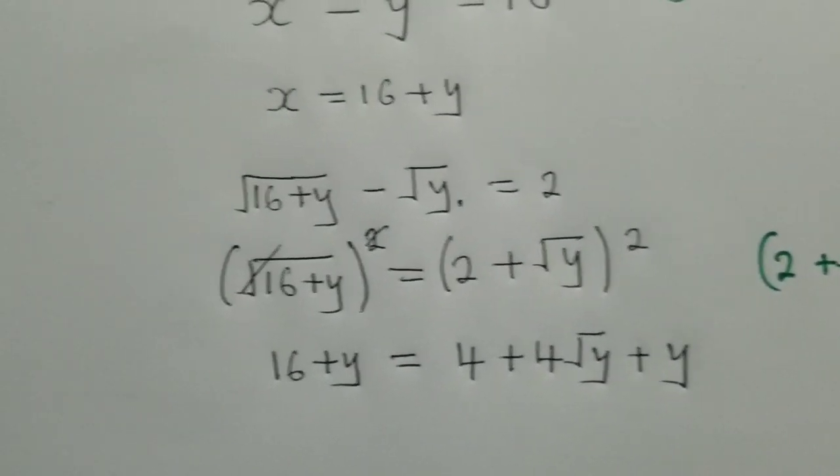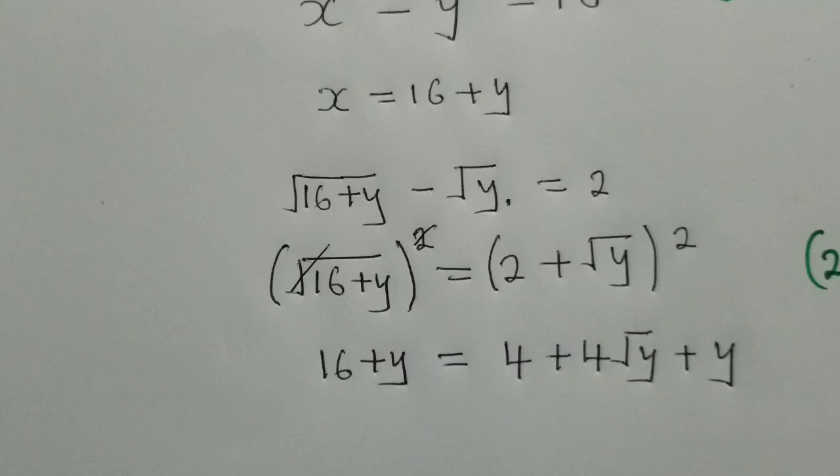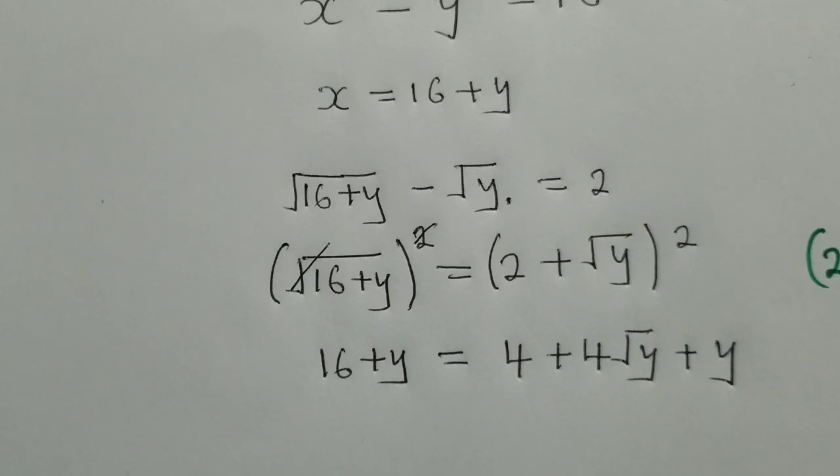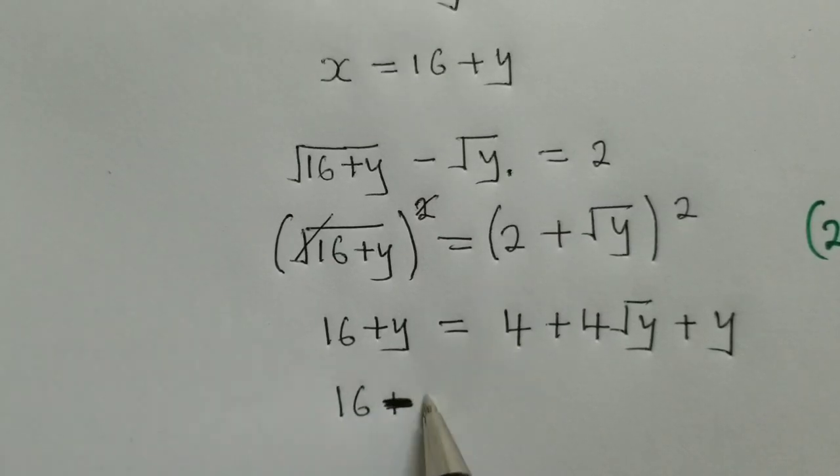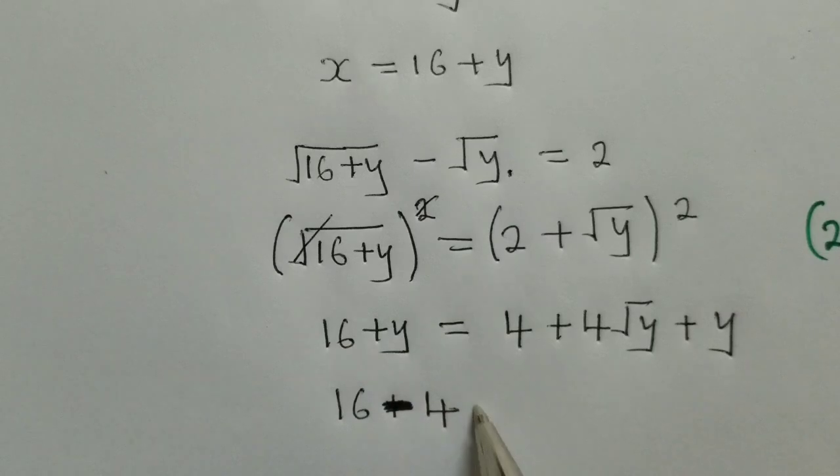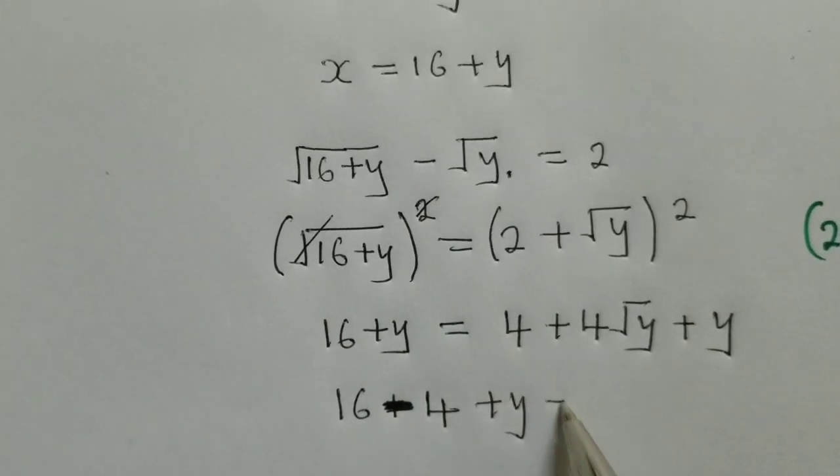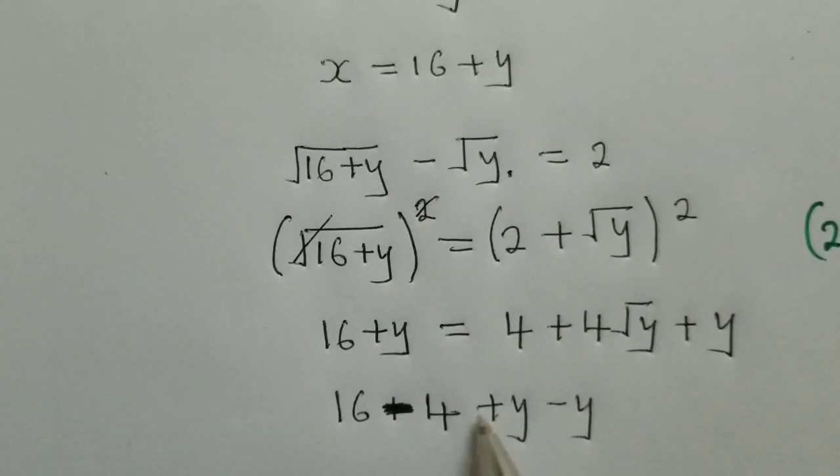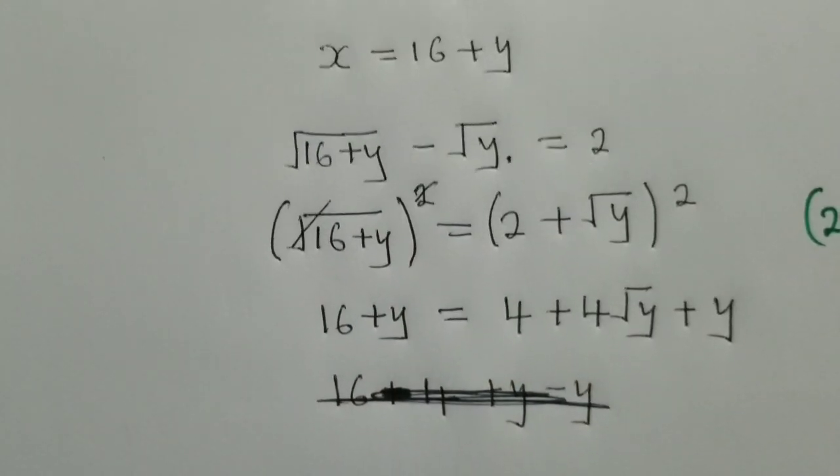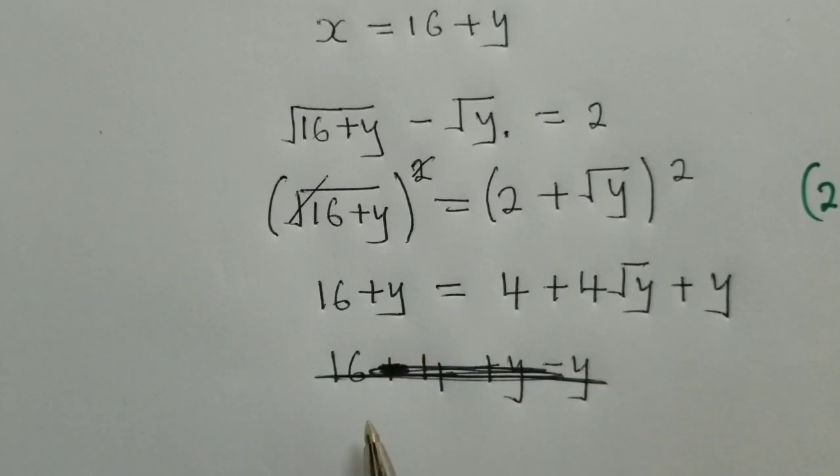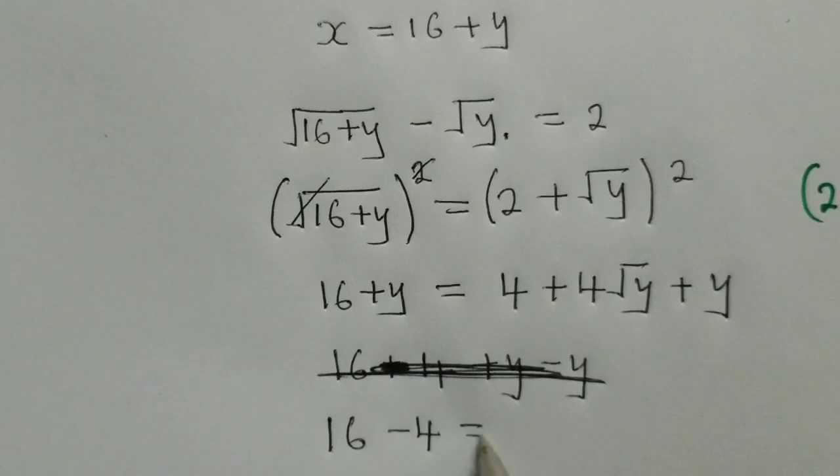Now from here, we group the like terms. So we shall have 16 minus 4, plus y minus y. Or if you want, you can bring them this side. Let me make the variables to the right side.